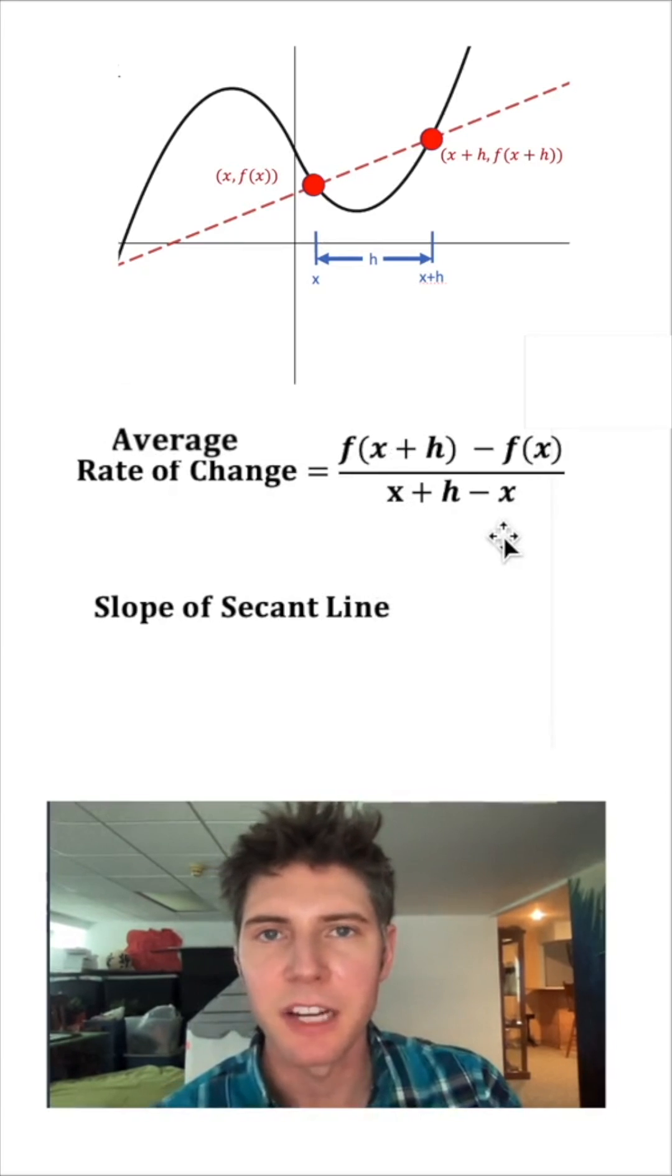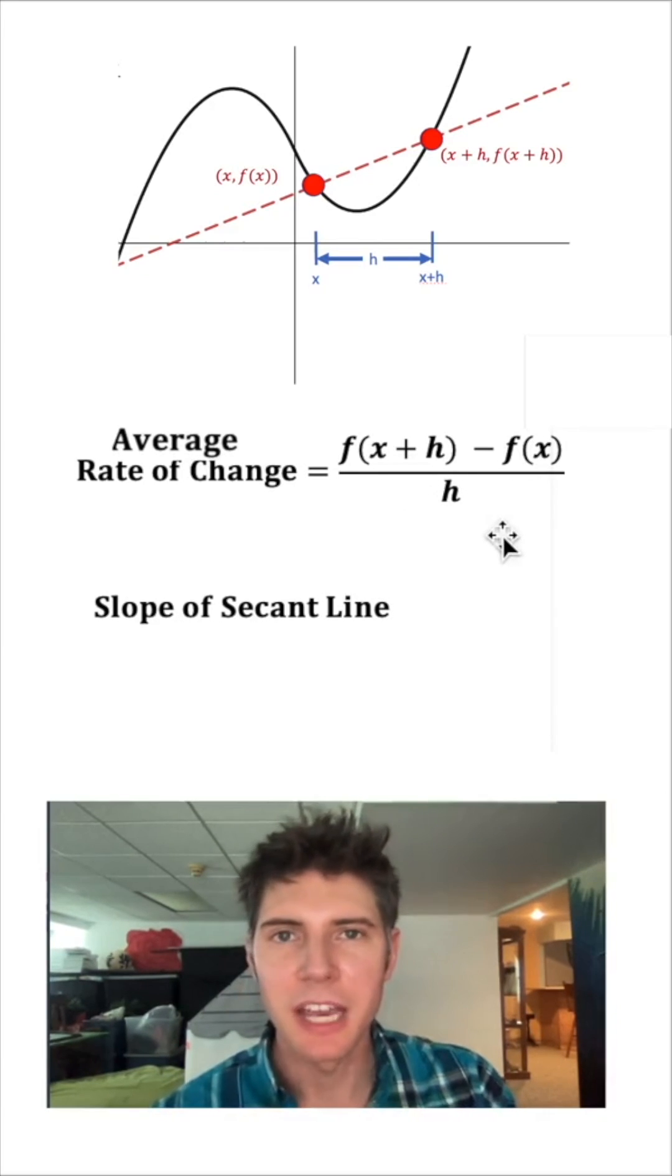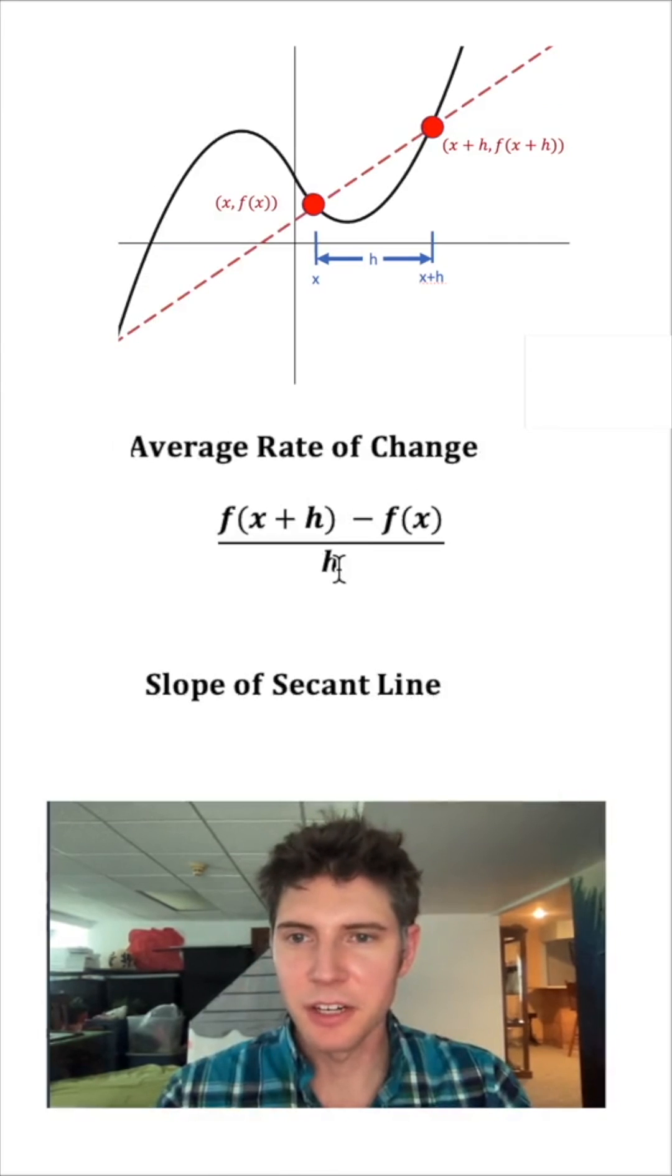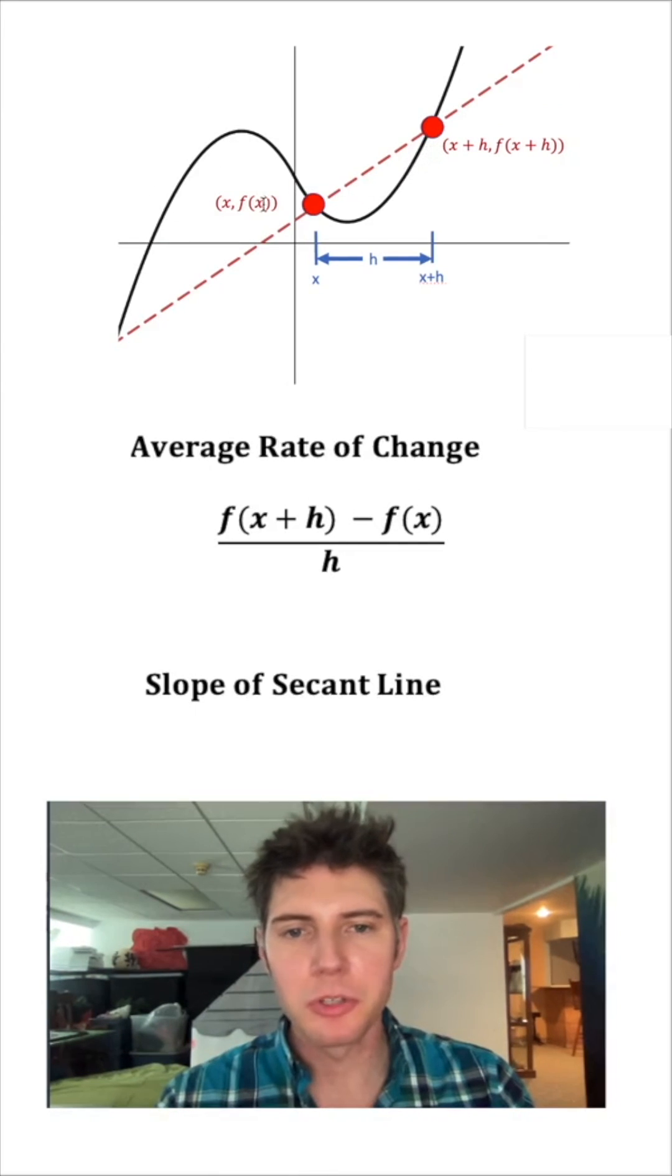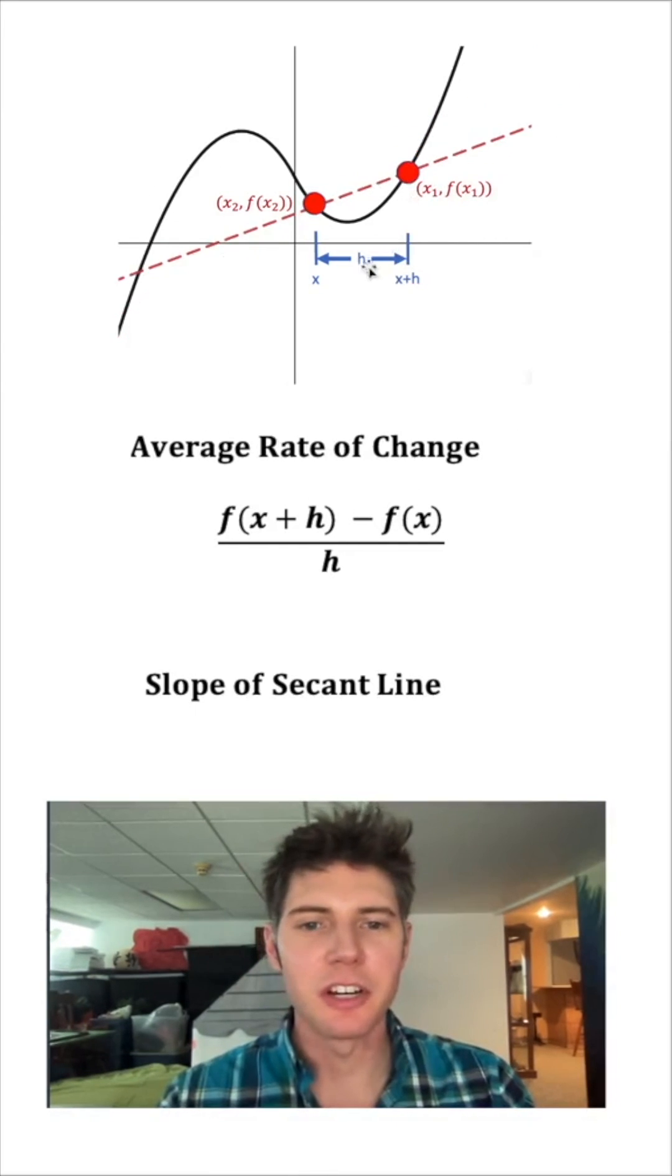This positive x and this negative x are going to cancel. So we just have an h on bottom. Let's move this down here, but let's start to move this point closer to this point. So our h is going to start getting smaller.